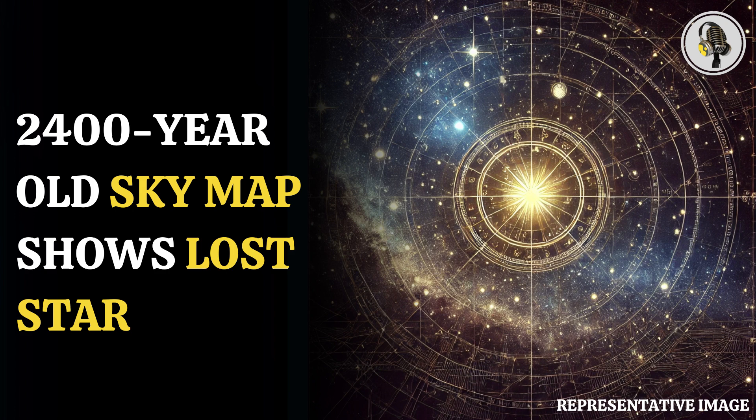People might have used the map to track seasonal changes before beginning agricultural activities. The study says the map dates from 1800 BC to 400 BC. It is one of the earliest depictions of the night sky ever found.